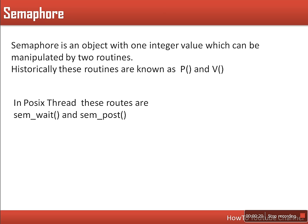One operation, historically known as P, is used for decreasing that value, and V is for increasing that value. P is sometimes also called wait and V is also called signal. In POSIX threads, these P and V operations are named sem_wait and sem_post.